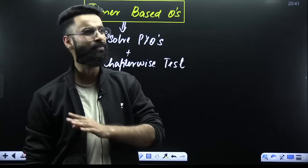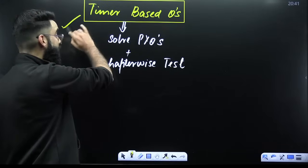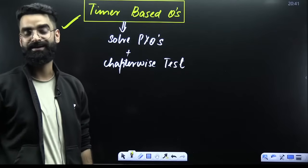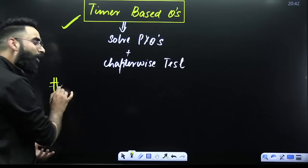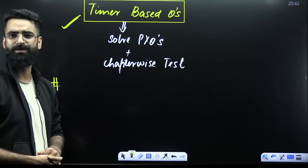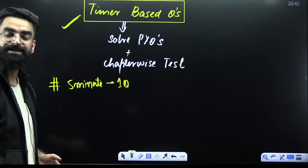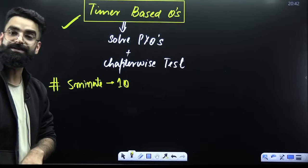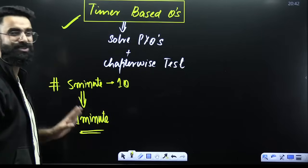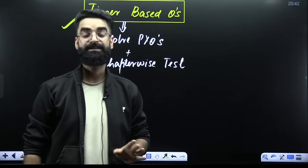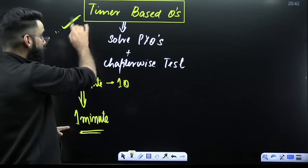Majority of students think their preparation is up to the mark, but in the actual examination they feel short of time. That's because they do not practice timer-based questions. You have to set a timer while solving questions. In the first go, you might take five minutes to solve one physics question — that's fine. But when you try to solve the same question again after a week or two weeks, you should be in a position to solve it in a minute.